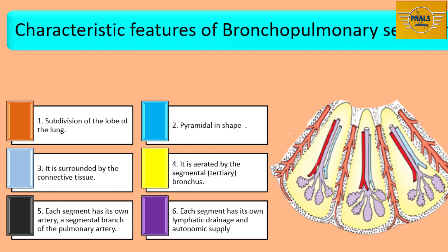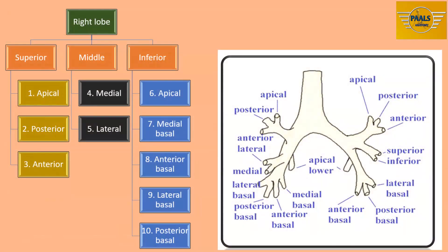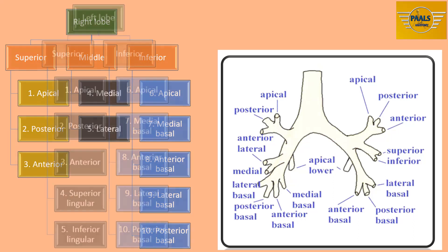The right lung has three lobes. The superior lobe has three segments: apical, posterior, and anterior. The middle lobe has two segments: lateral and medial. The inferior lobe has five segments: superior (apical), medial basal, anterior basal, lateral basal, and posterior basal. A mnemonic — 'a palm, a map' — may help for easy recall of these segments on the right.